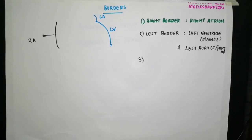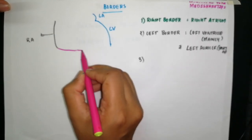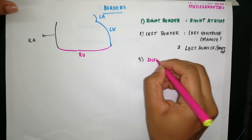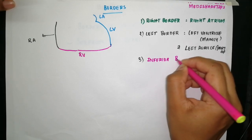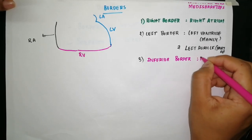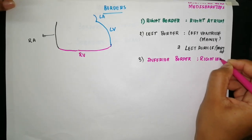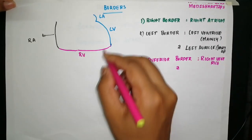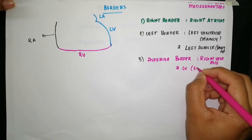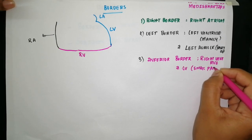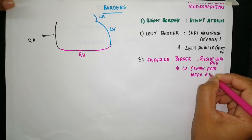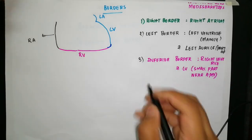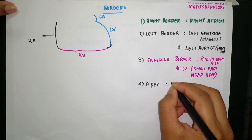The third border is the inferior border, which is almost horizontal and is formed mainly by the right ventricle, and partly by the left ventricle near the apex. The apex itself is formed by the left ventricle.